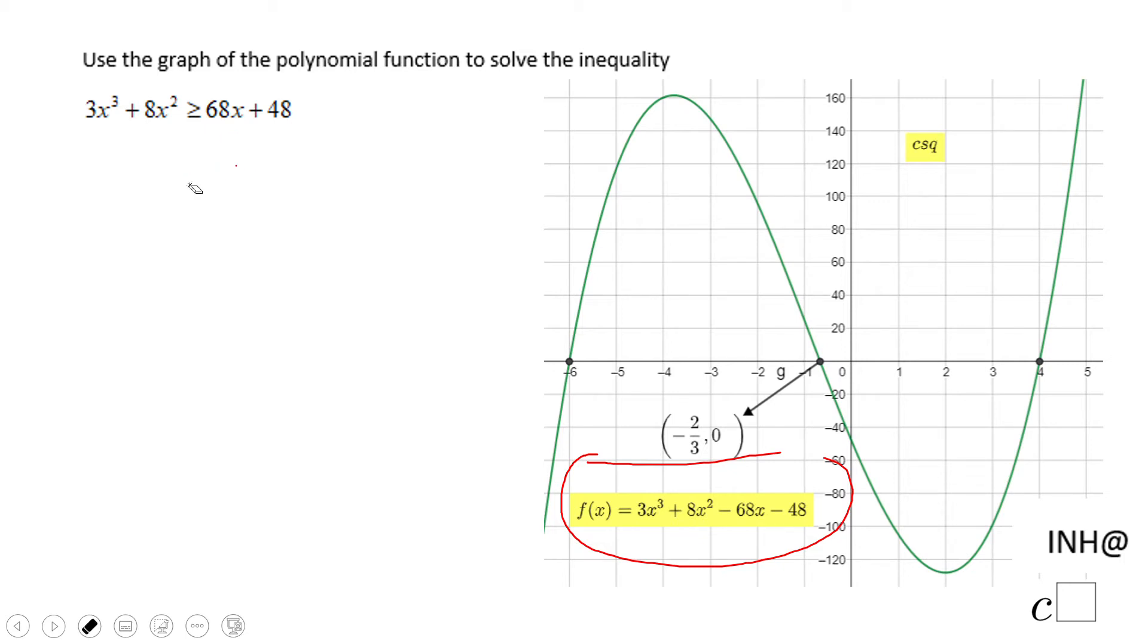We subtract 68x and 48 on both sides. What do we get?